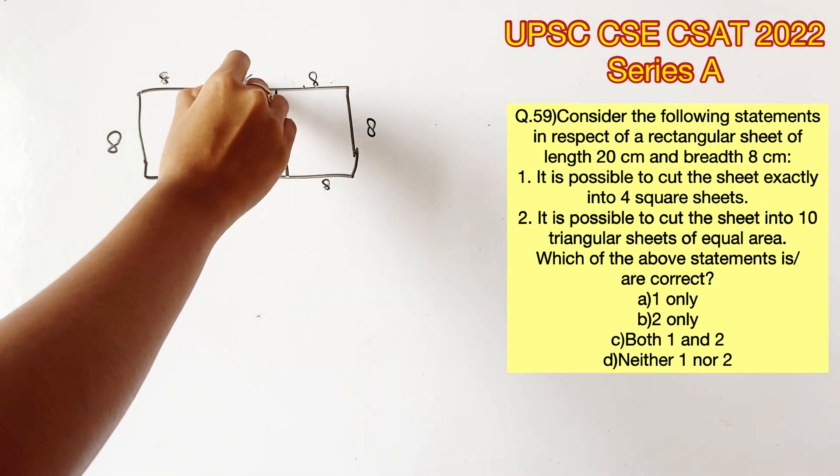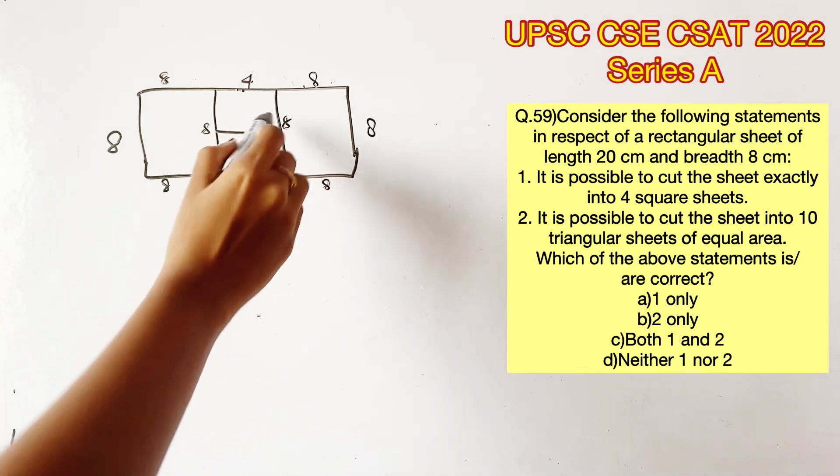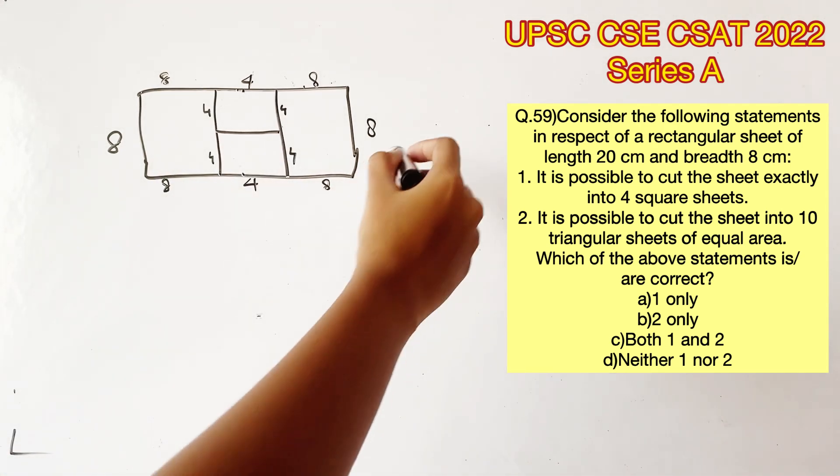So 12 minus 8 will be 4, we have a remaining of 4 in the middle. And if we horizontally cut it here, we will get 2 more squares. So the first statement is right.